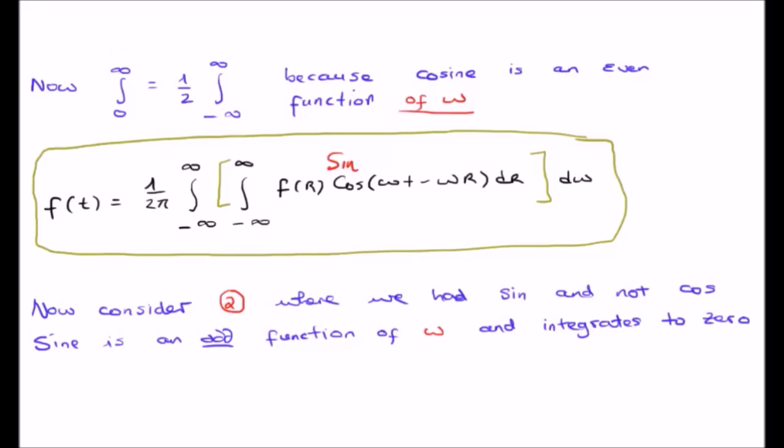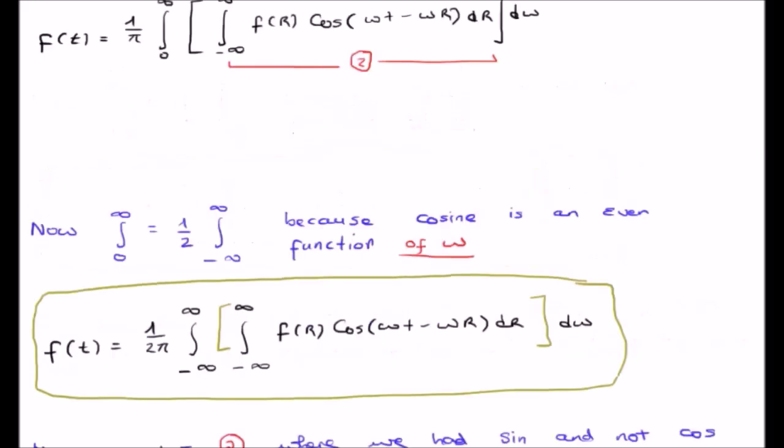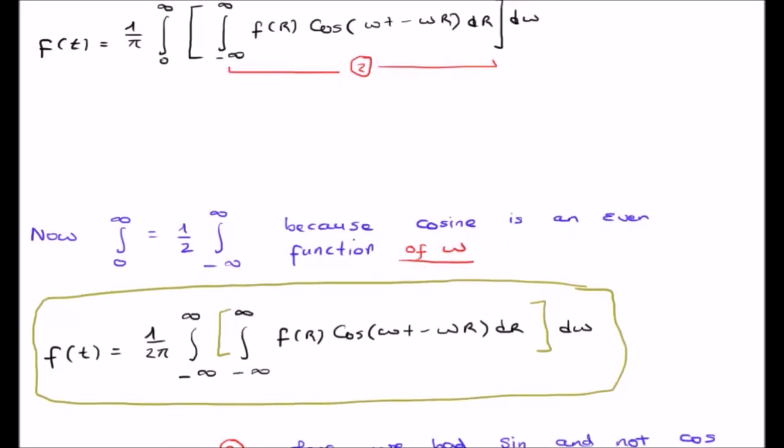Now sine is an odd function, and in this case it's an odd function of omega. And therefore in the integral it will integrate to zero.